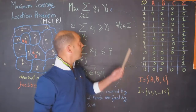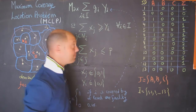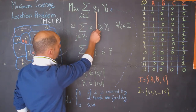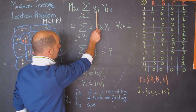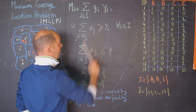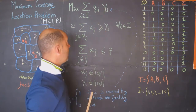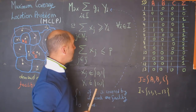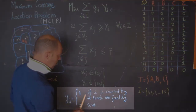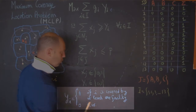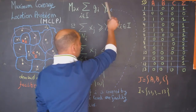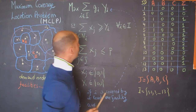I'm going to go over the formulation of the MCLP. We have an objective function to maximize. We're trying to maximize the demand at i, or g sub i, multiplied by a decision variable y sub i. Y sub i is equal to 1 if i is covered by at least one facility, and 0 otherwise. So we have this new decision variable in the objective function.